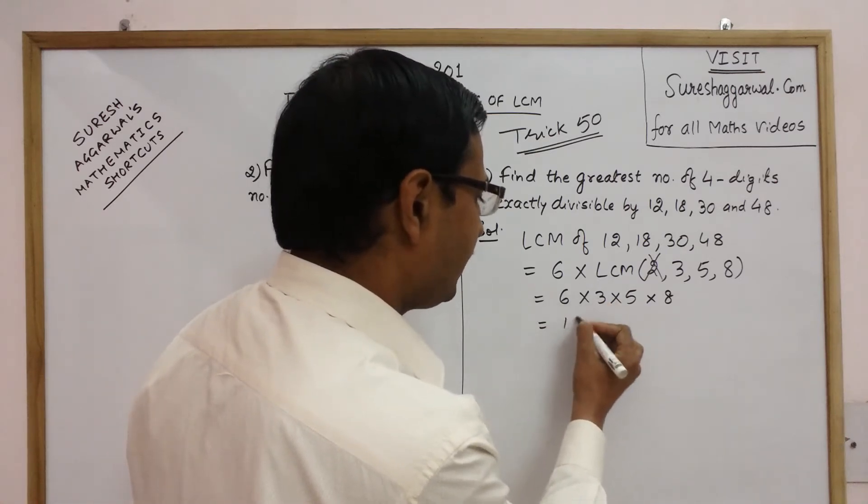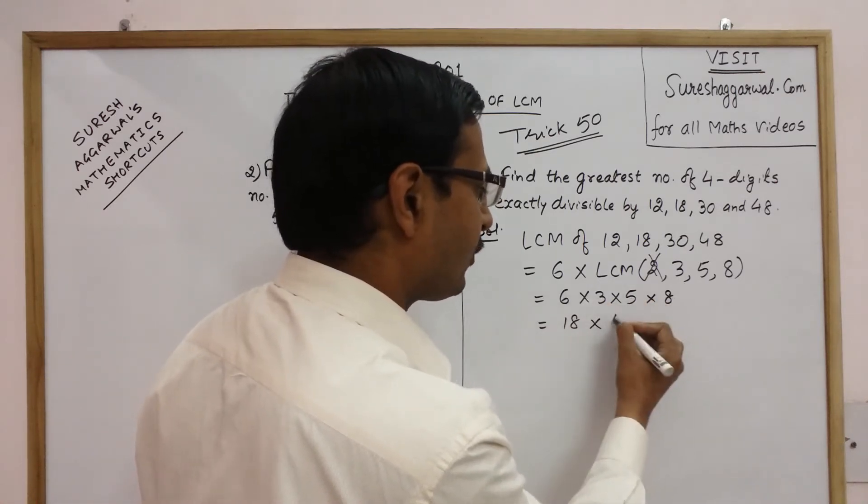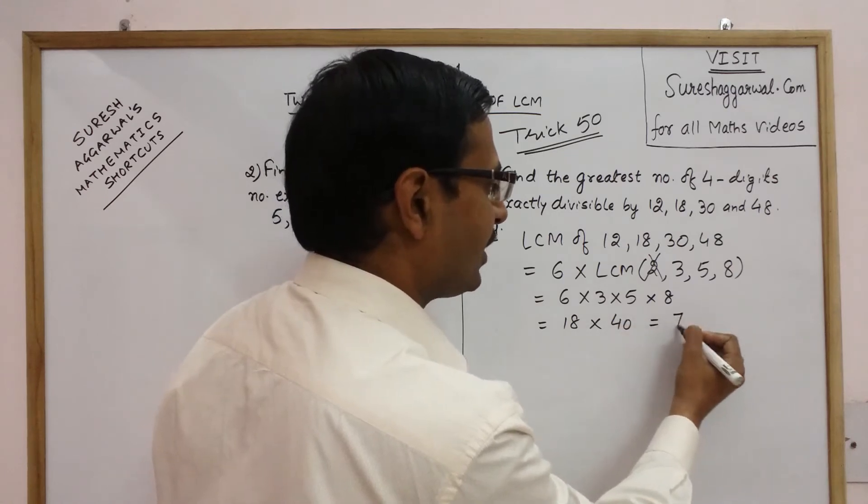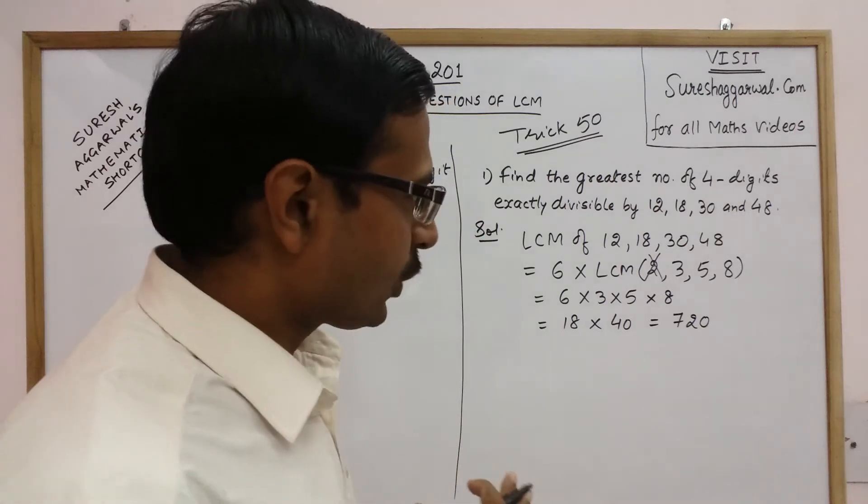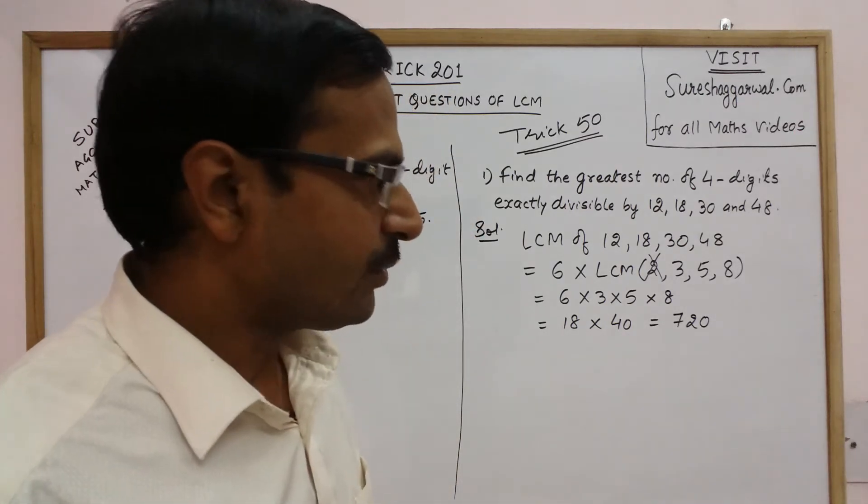So here you have 6×3 is 18 and 8×5 is 40 which gives you 720 as your LCM of these four numbers 12, 18, 30 and 48.